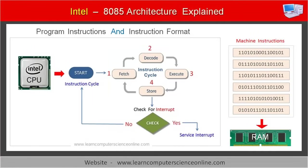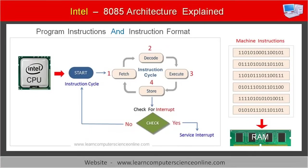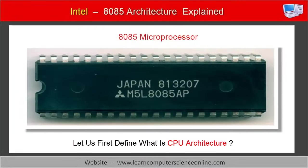The instruction cycle is a three-step CPU operation, which includes fetch, decode, and execute. The CPU executes the program by repetitively performing this instruction cycle. Now that you know how the microprocessor works, let us move on to the next topic: what is microprocessor architecture all about?